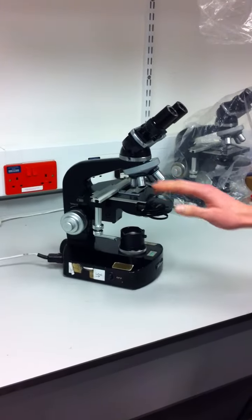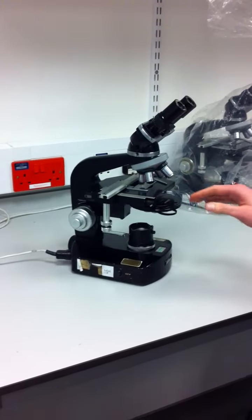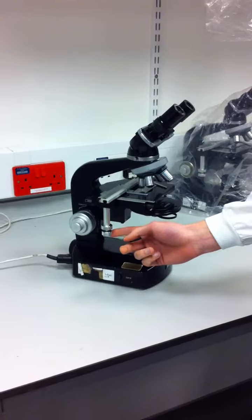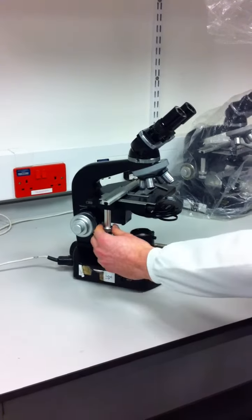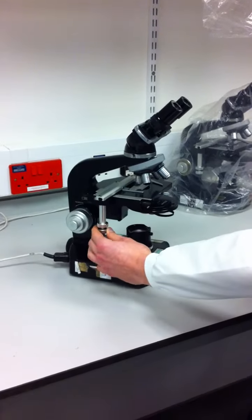Below the objective lenses, we have the stage. This is where you set your microscope slide, and this is where you can adjust it. These are the stage adjustment screws. The top one moves it forward and backwards. The bottom one moves it side to side.